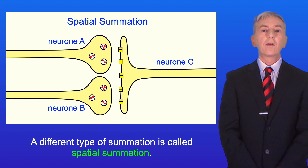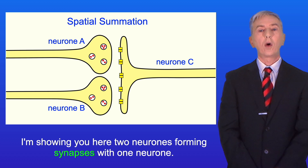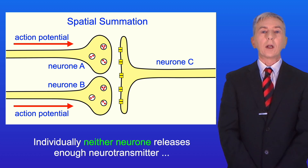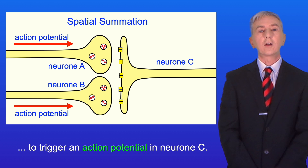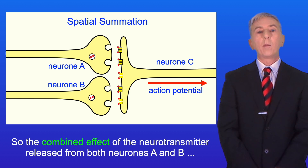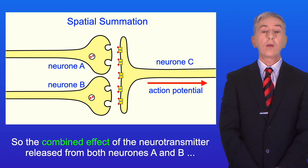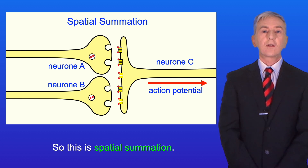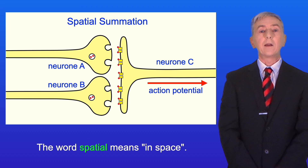Now a different type of summation is called spatial summation. I'm showing you here two neurons forming synapses with one neuron. Imagine that action potentials arrive at both neuron A and neuron B. Individually, neither neuron releases enough neurotransmitter to trigger an action potential in neuron C. Now in this case the effects of the two neurons can add together. So the combined effect of the neurotransmitter released from both neurons A and B is enough for neuron C to reach the threshold and trigger an action potential. This is spatial summation, and the word spatial means in space.